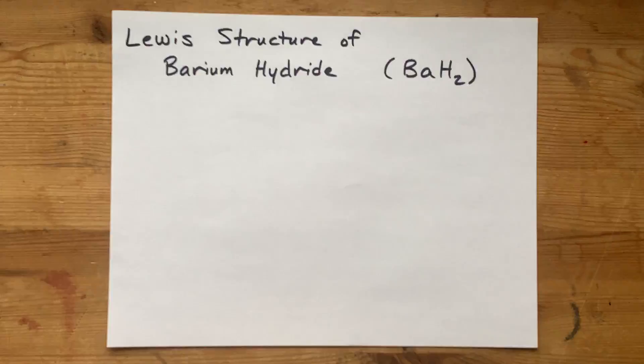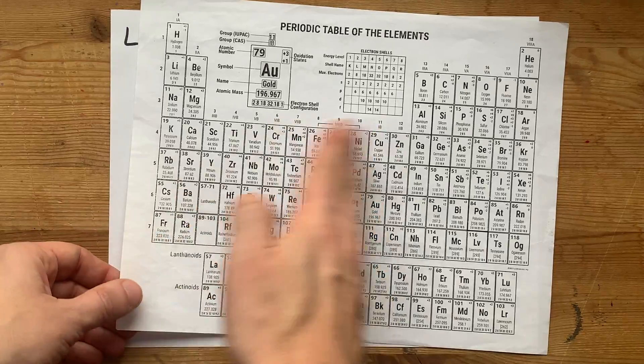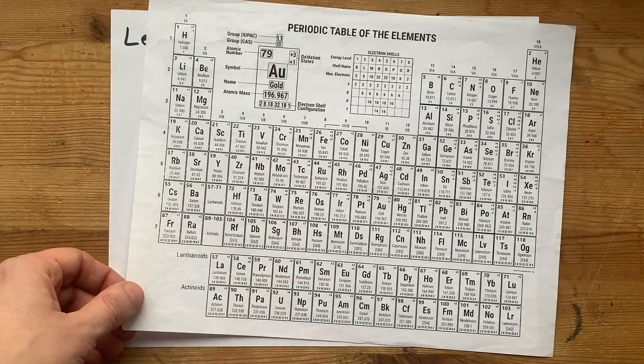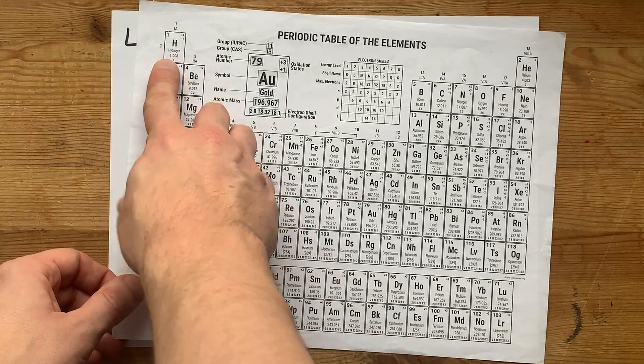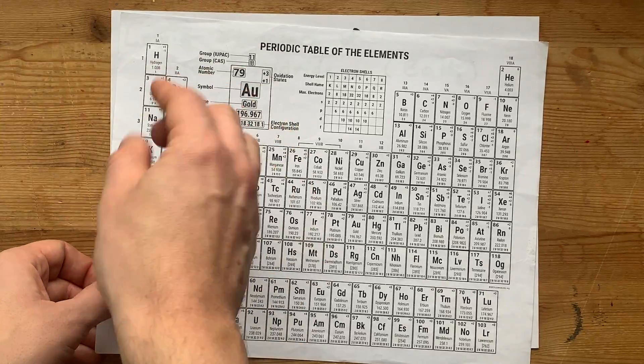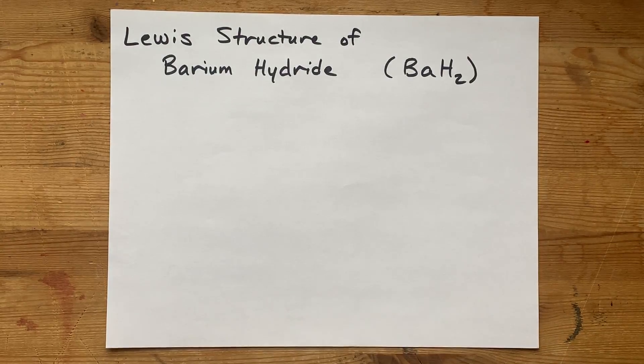We're going to do the Lewis structure of barium hydride. Now barium is a metal, one of the alkaline earth metals from group 2 of the periodic table. Hydrogen is a non-metal, even though it's on the left side of the table, it's simply there for organizational purposes. It is a non-metal, we have to agree on that.